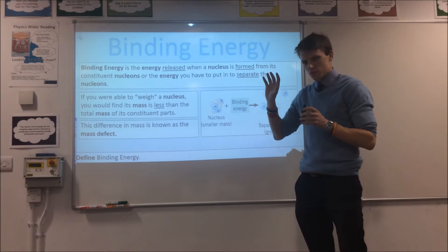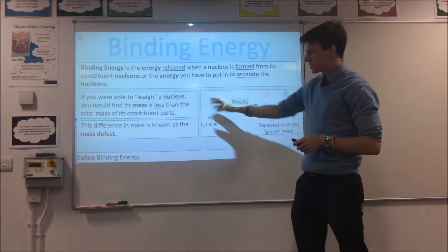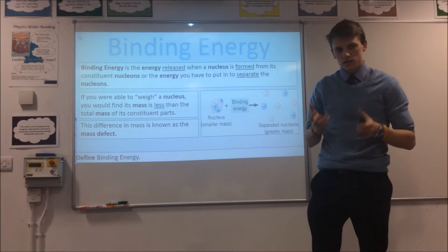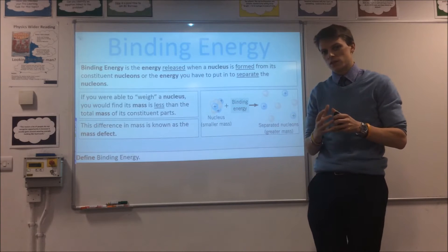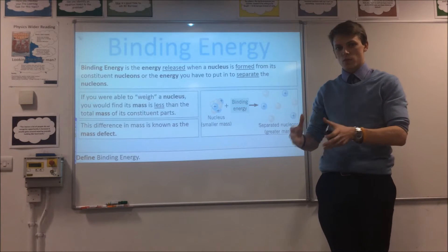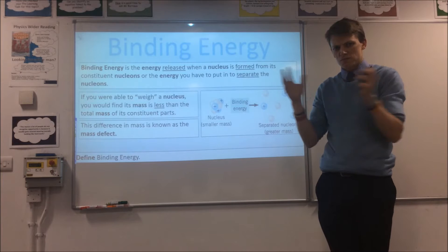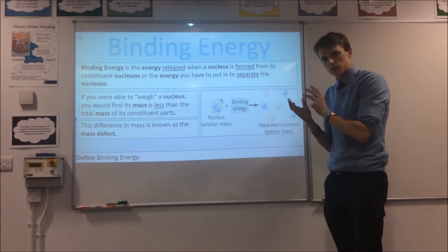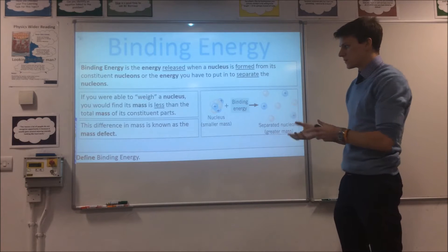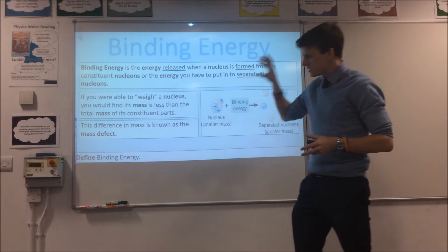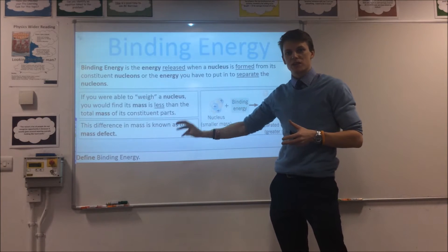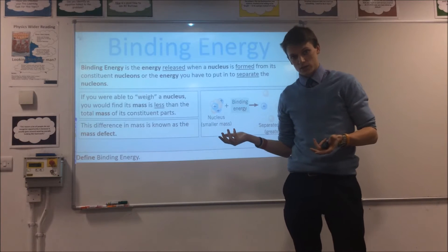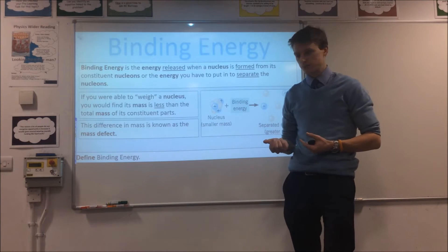If you actually were able to somehow weigh a nucleus, what you'd find is the mass of the nucleus is less than the sum of its constituent parts. Some mass has gone somewhere, and this binding energy is a mechanism to explain what's going on. This difference in mass is often known as the mass defect, and it's actually the m in E = mc², the equation that most people know.